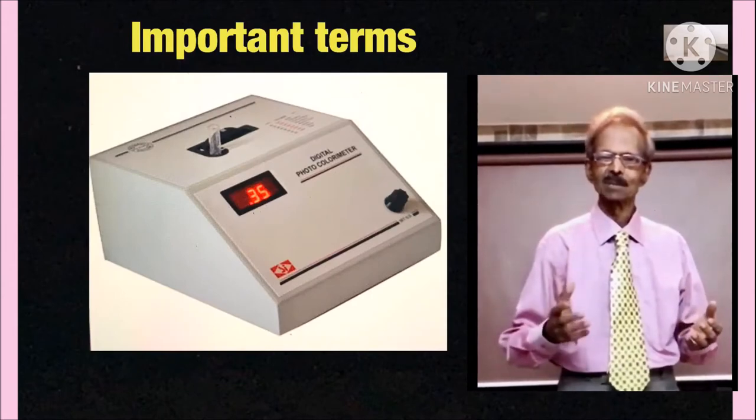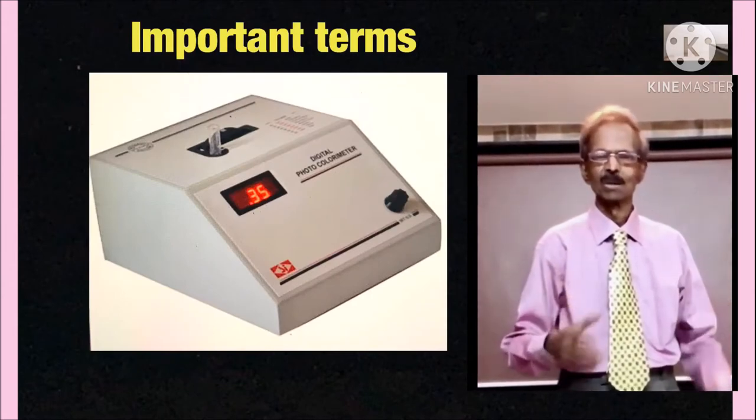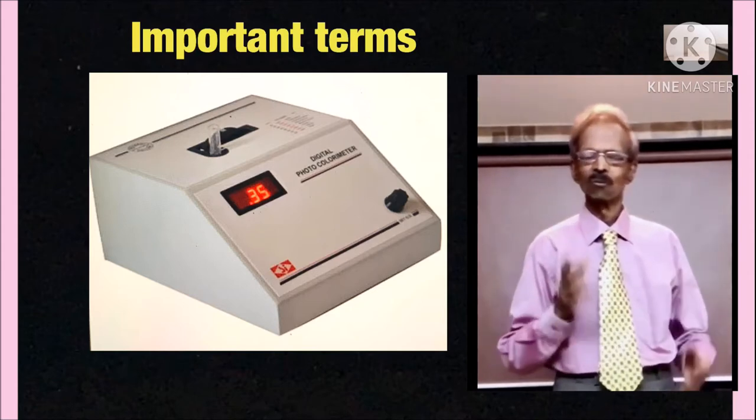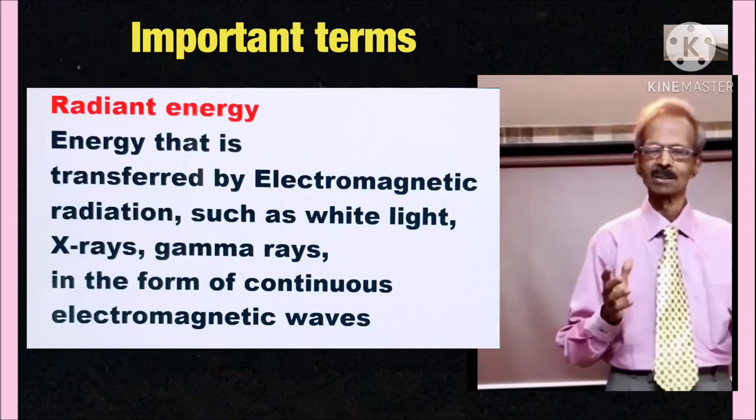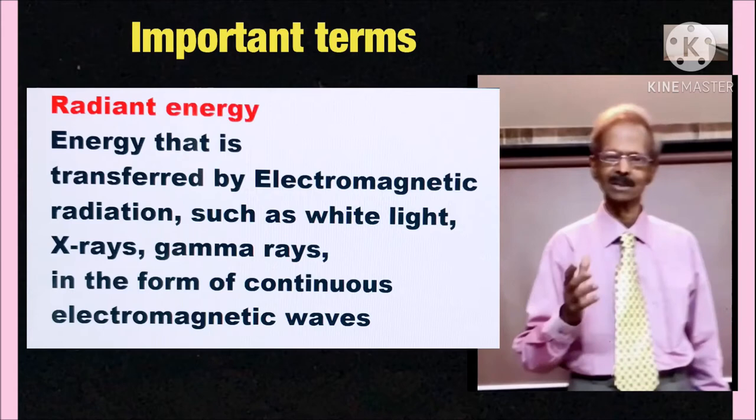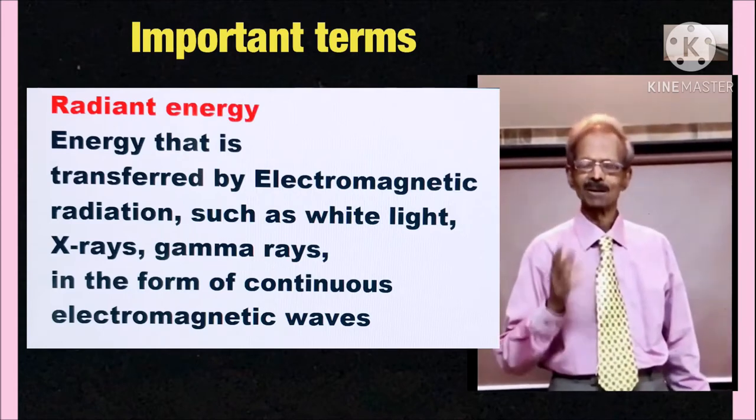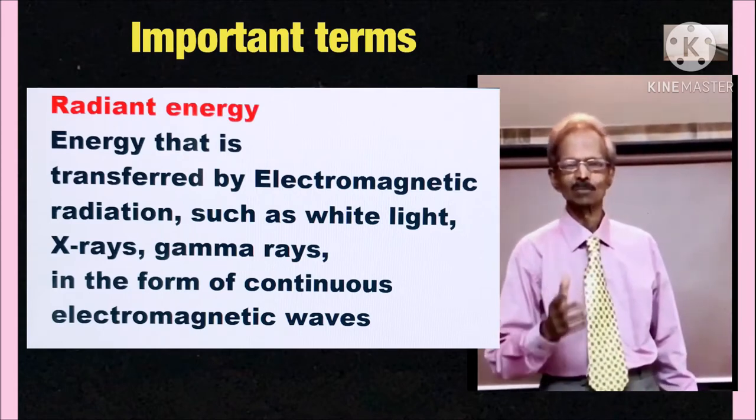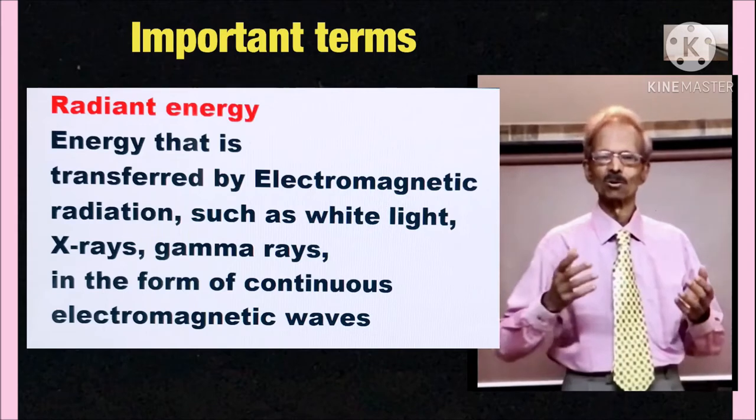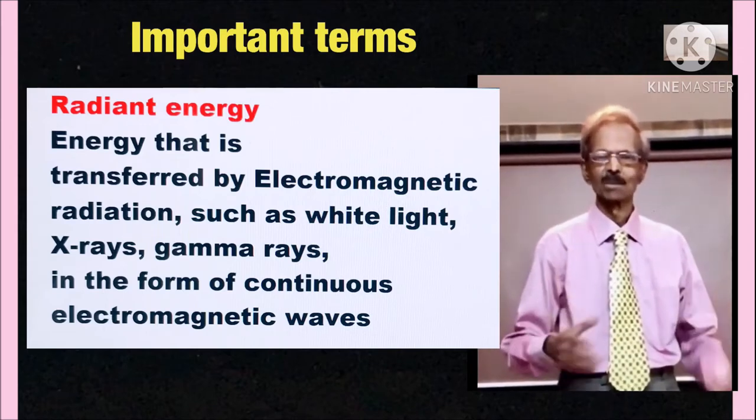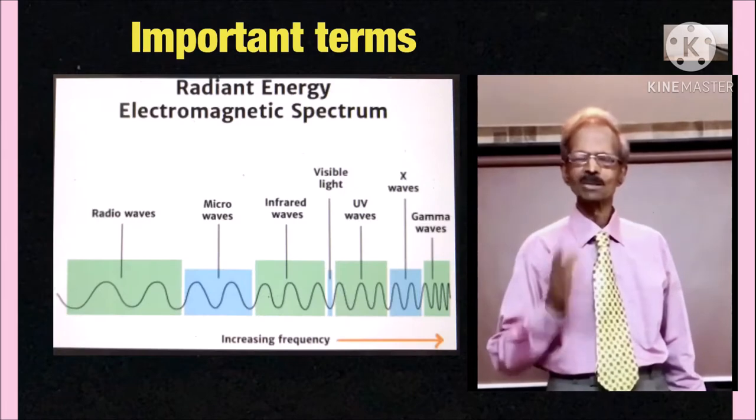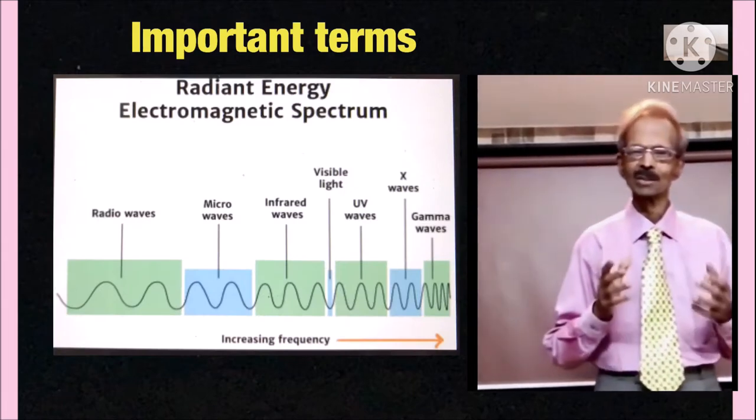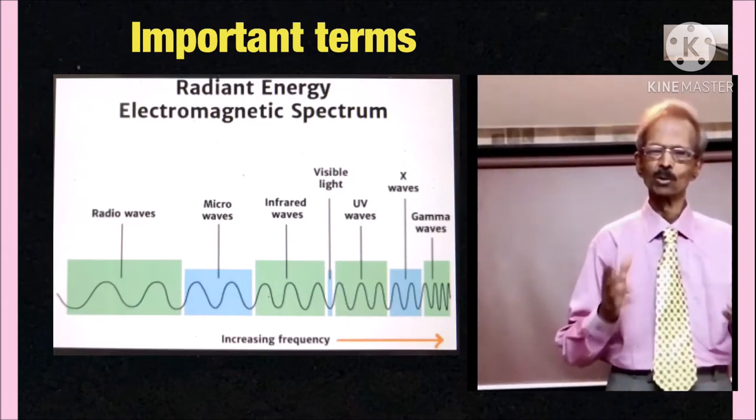Before we discuss about photometer and photometry, you should get familiar with related important terms. First, radiant energy. Radiant energy is that energy transferred by electromagnetic radiation such as white light, x-rays, gamma rays in the form of continuous electromagnetic waves.